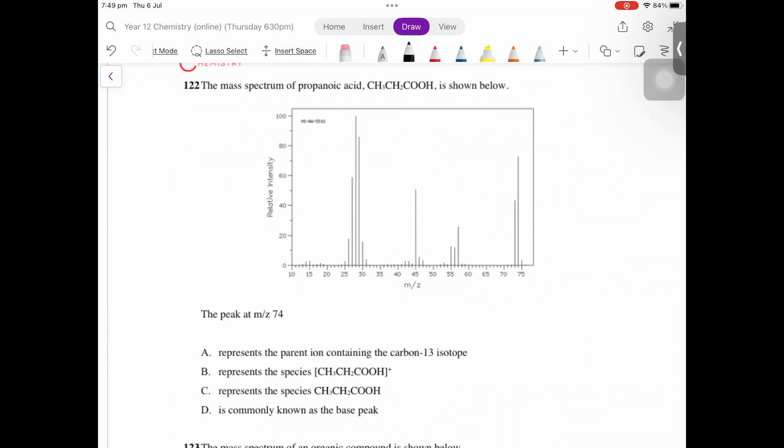First things first. D, the base peak is the one at 100%. So the one at 100% is this one right here, which is less than 30.